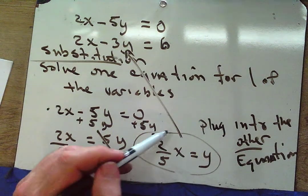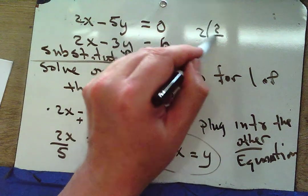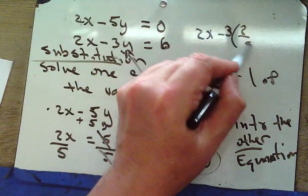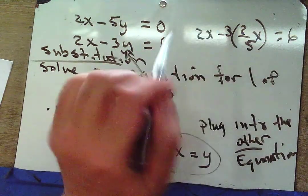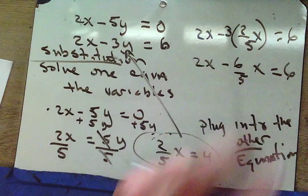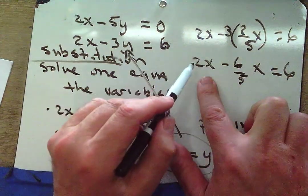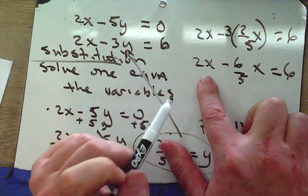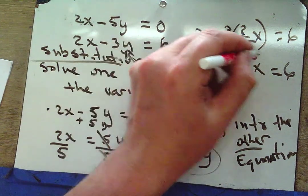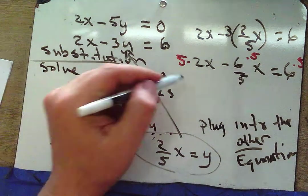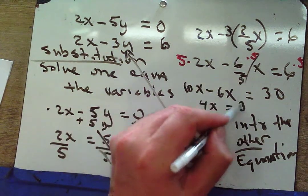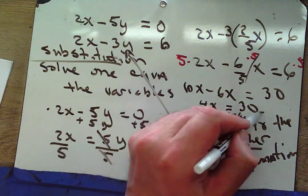So I'm plugging in for y: 2x minus 3 times (2/5)x equals 6. That gives 2x minus (6/5)x equals 6. To clear the fraction, multiply everywhere by 5: 10x minus 6x equals 30, so 4x equals 30, and x equals 30/4 which is 15/2.